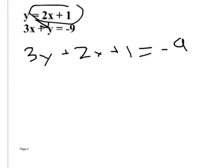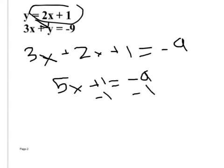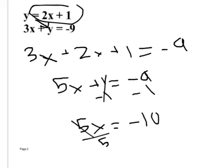Now that we have one variable x, we solve for it. 3x plus 2x is 5x. We subtract 1 from both sides, which gives me 5x equals negative 10. So I divide by 5, and x is negative 2. I found my x coordinate.